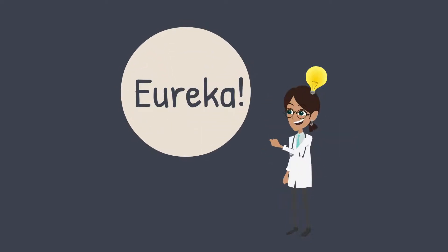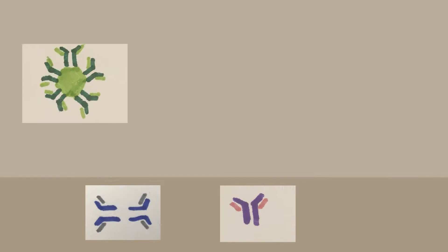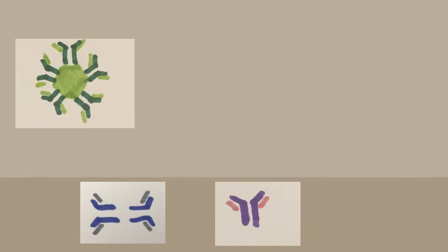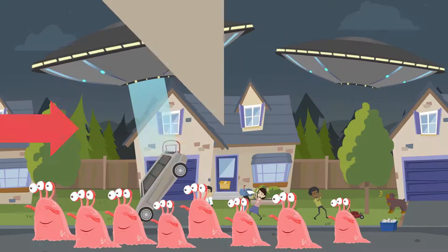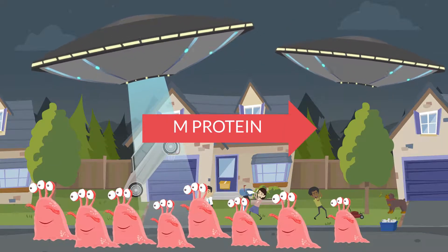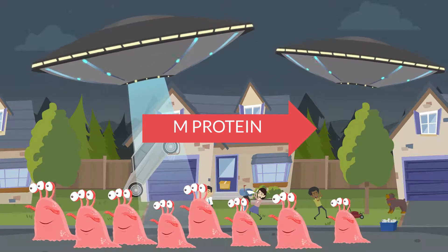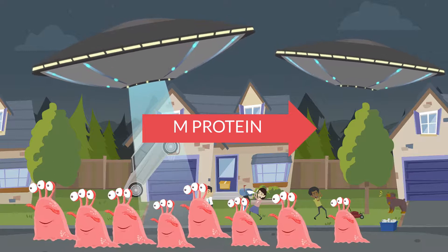Eureka! In our previous video, we discussed the various types of para-proteins, including heavy-chain para-proteins and light-chain para-proteins. We discussed that an abnormally large number of para-proteins with an identical appearance is called an M-protein, and they are produced by an abnormal clone of plasma cells.